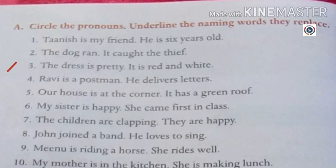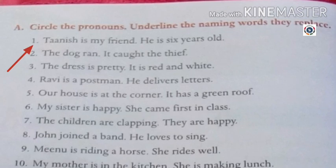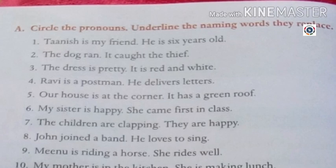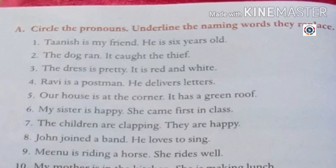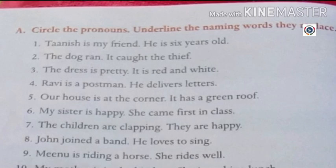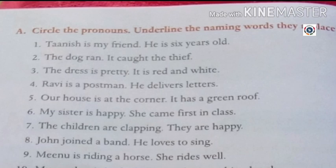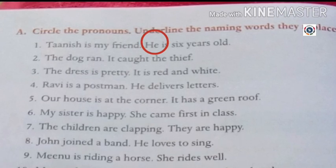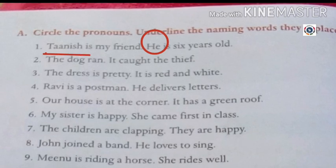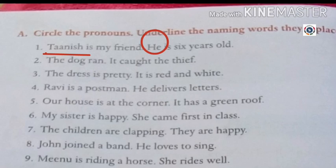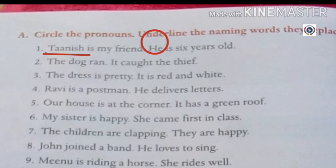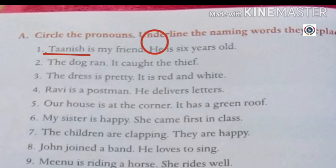Now read the first one. 'Tanish is my friend. He is 6 years old.' In the first sentence, circle the pronoun and underline the naming word it replaces. In this example, 'he' is the pronoun — so we need to circle 'he'. 'Tanish' is the naming word and 'he' is the pronoun. Complete the remaining ones in the exercise similarly.